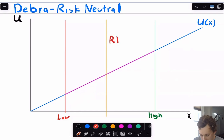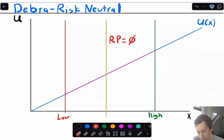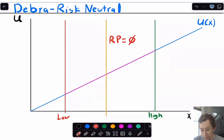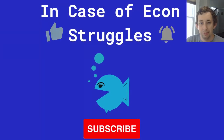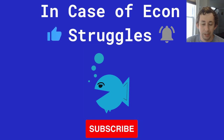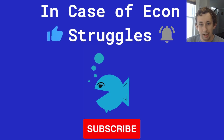So again, this is the certainty equivalence for the three different types of risk preferences. We've done Bill, who's risk averse, Aaron, who's risk loving, and Deborah, who's risk neutral — just graphically. If this video helped you or if these videos in general are helping you out, please like and subscribe. We'll see you next time for another case of Econ Struggles.